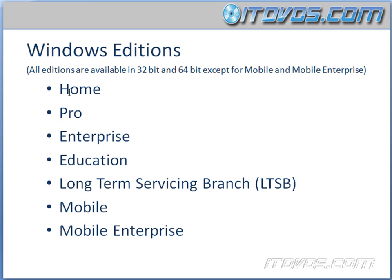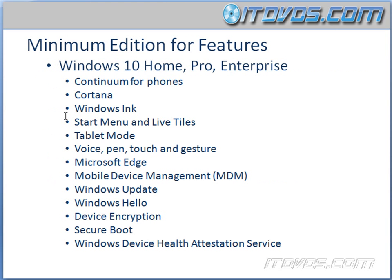Now let's take a look at the differences between mainly these first three editions — Home, Pro, and Enterprise. Everything that's available in Home is also available in Pro, and everything in Home and Pro is also available in Enterprise. So basically, with each version you go up, you get extra features — you don't lose anything. These features are very important to memorize for the test, because we're definitely going to get questions about which is the minimum edition of Windows 10 needed for a given set of features.